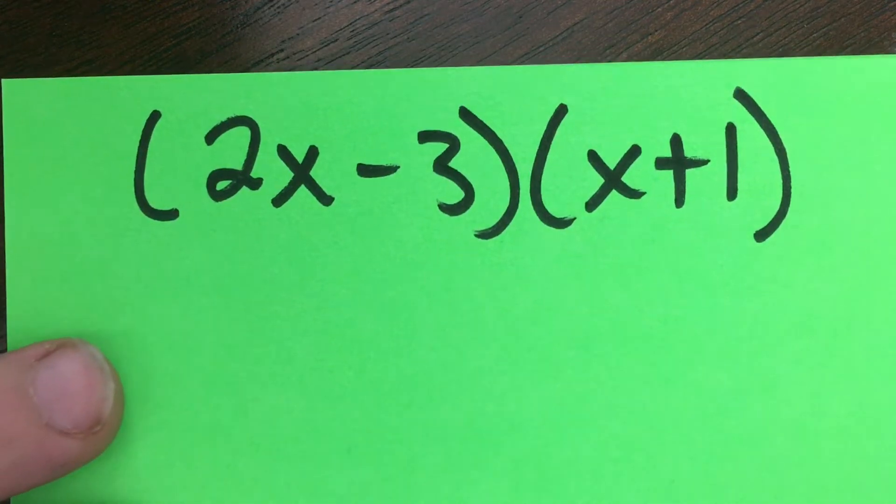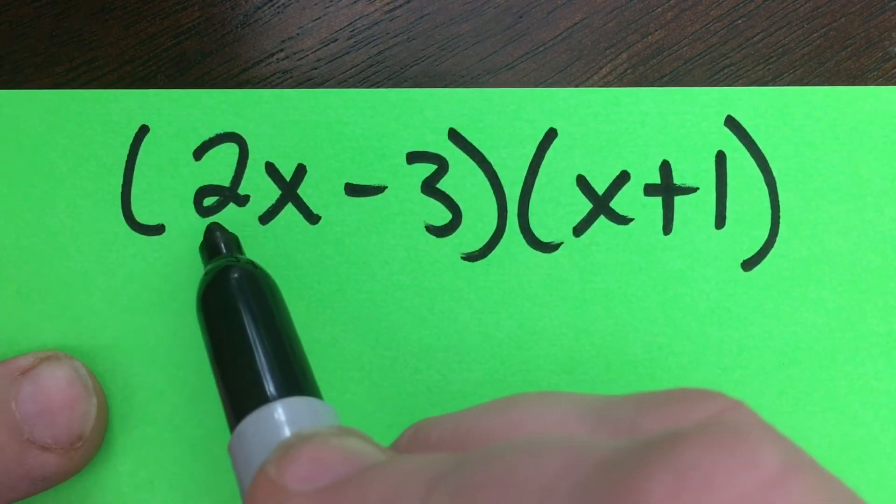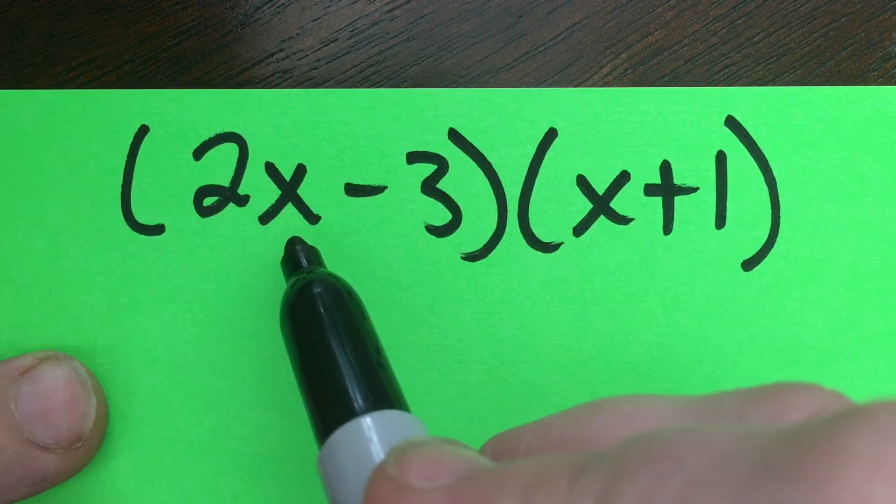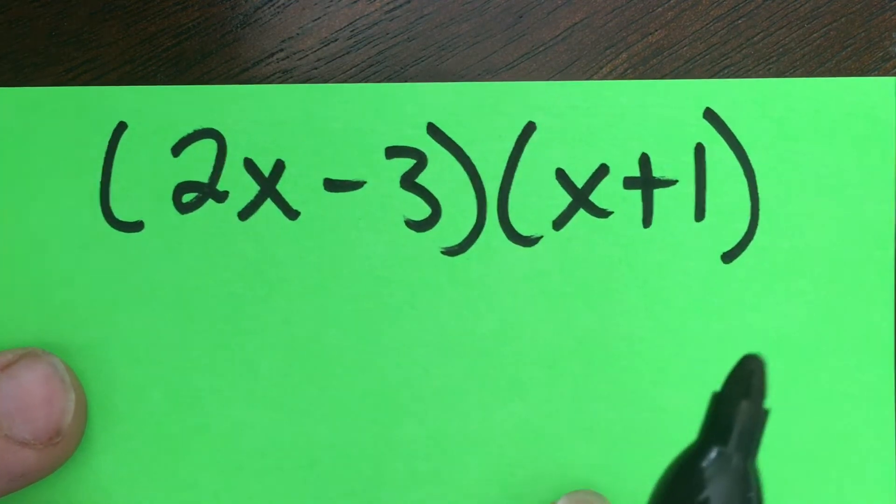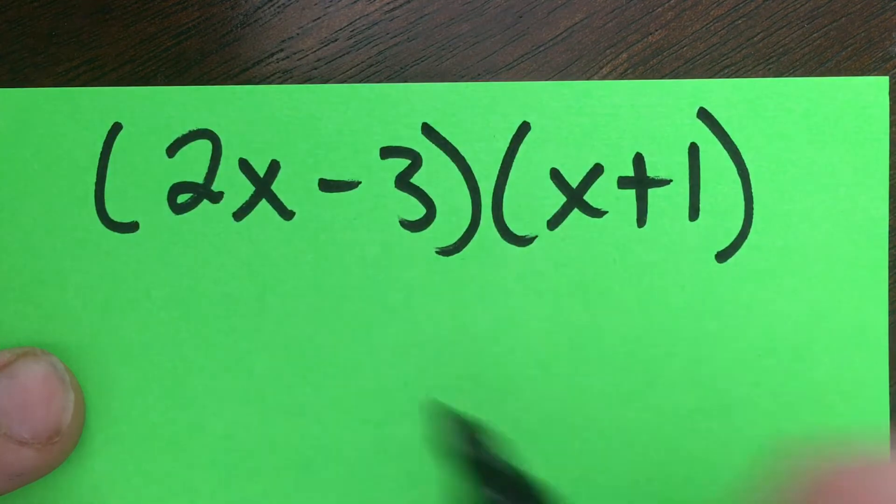Here's another example of distribution, but notice now we have a coefficient in front of the x term. This can happen, so now we're going to get practice doing that.